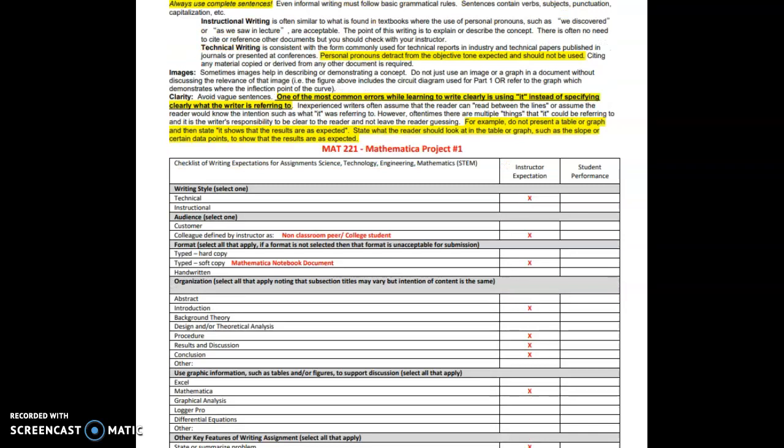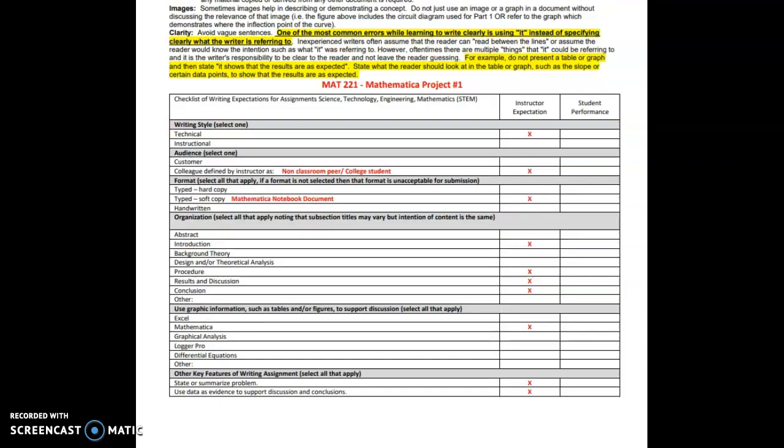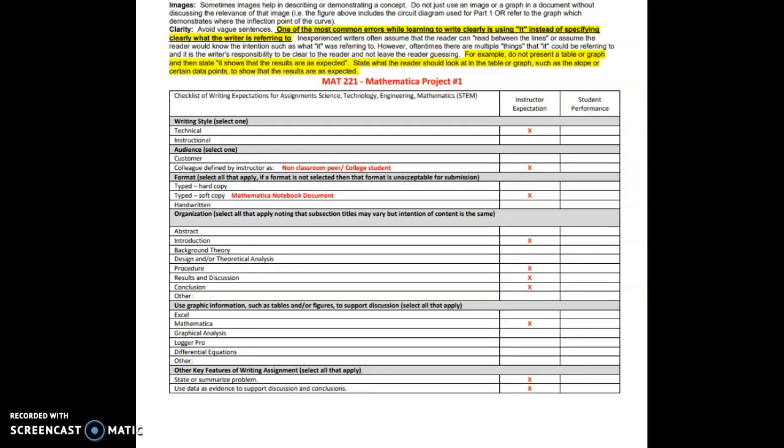For example, do not present a table or graph and then state it shows that the results are expected. State that the reader should look at the table or the graph, such as the slope or the certain data points, to show that the results are as expected. So make sure you reference what that it is referring to, and I would just try to not use the word it as you go through.